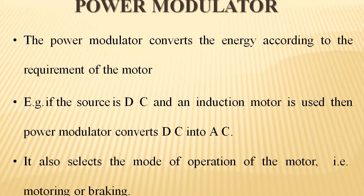The power modulator converts the energy according to the requirement of the motor. For example, if the source is DC and an induction motor is used, then the power modulator converts DC into AC. It also selects the mode of operation of the motor, that is, motoring or braking.